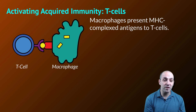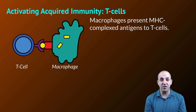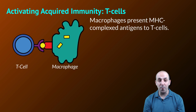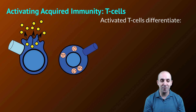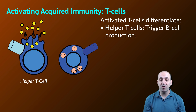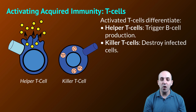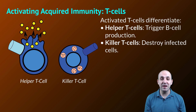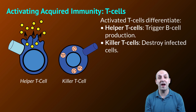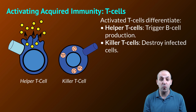A macrophage physically associates an antigen with a receptor on the surface of a T cell. Once that antigen is presented to the T cell, the T cell becomes activated and differentiates into two different types: helper T cells, which produce a variety of cytokines that trigger things like B cell production, and killer T cells, which find and destroy any infected cells in the body. This is what we mean when we say T cells are responsible for a cell-mediated response — carried out through direct cell contact and signaling molecules.